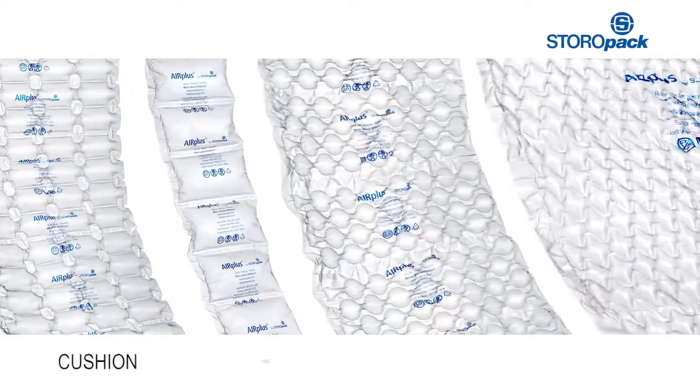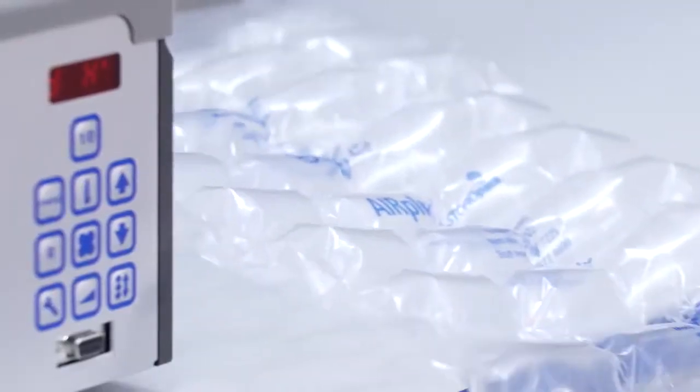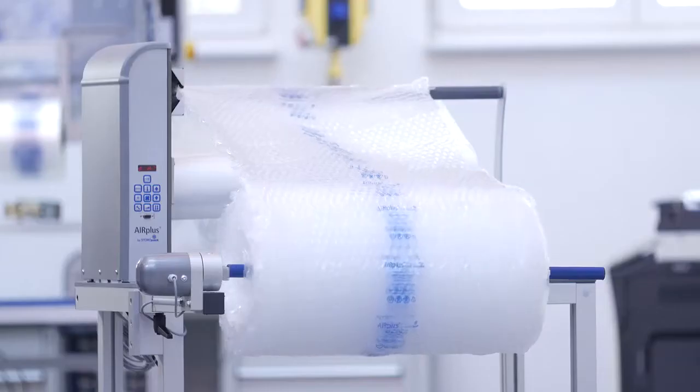Storopack offers four different types of air cushion for many different applications. These air cushions are produced with ease directly at the packing station as required, allowing you to quickly and optimally protect your products.